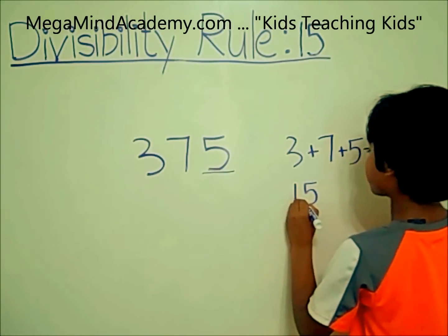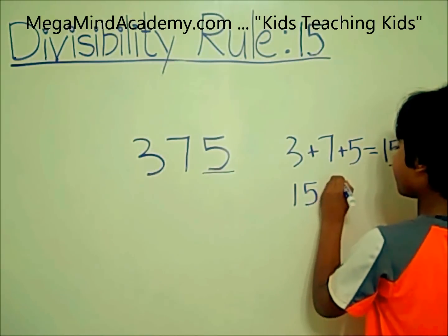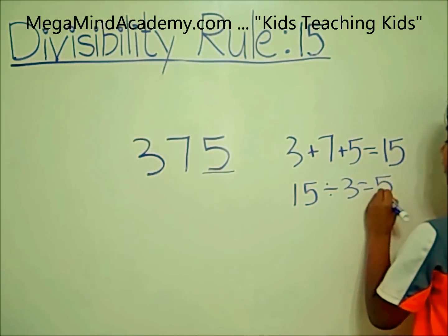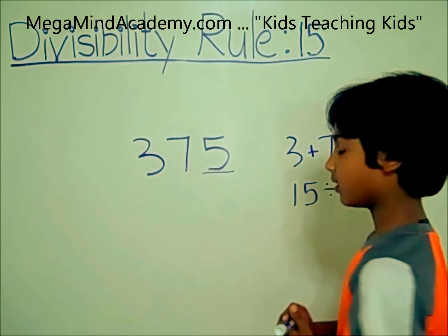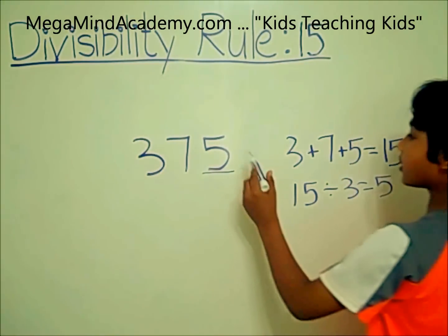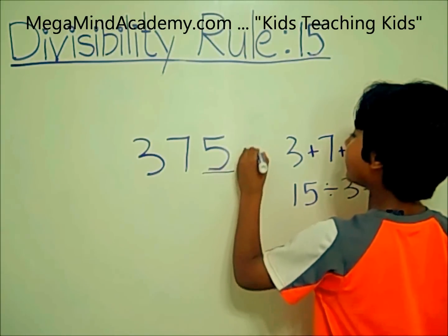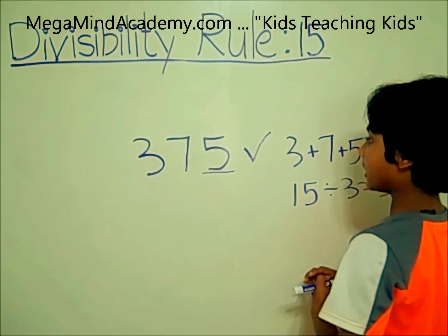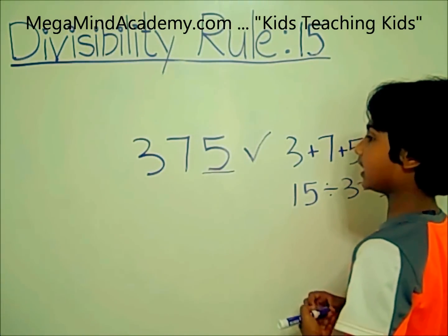15 divided by 3 equals 5 without any remainders. So that means 375 is divisible by 5 and 3, and that also means 375 is divisible by 15.